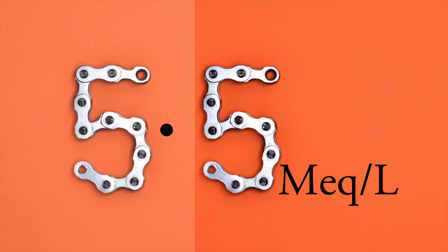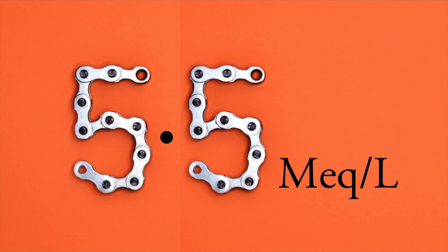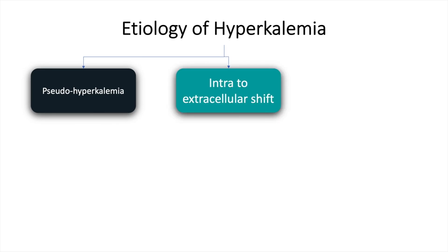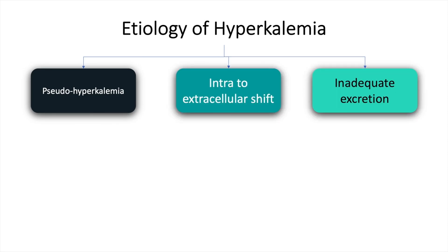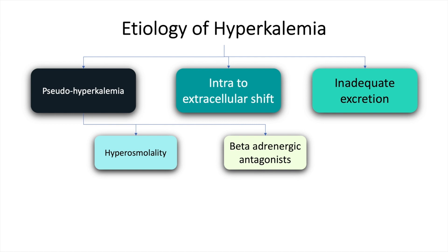Hyperkalemia is defined as a serum potassium of more than 5.5 milliequivalents per liter. The etiology of hyperkalemia may be classified into pseudo-hyperkalemia, intra-to-extracellular shifts, and inadequate excretion. Pseudo-hyperkalemia may occur because of hyperosmolality and beta-adrenergic antagonists.